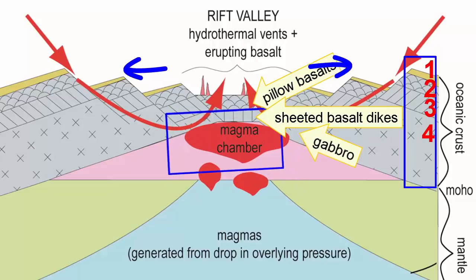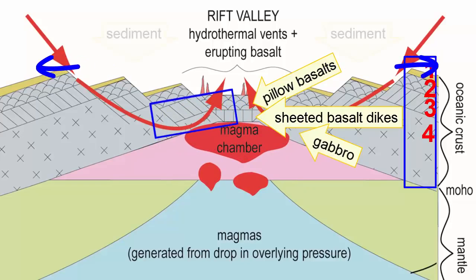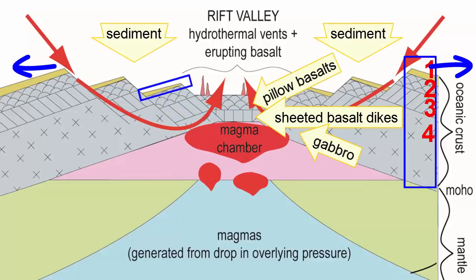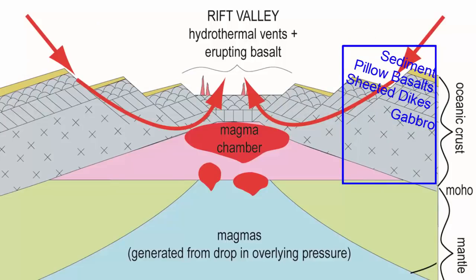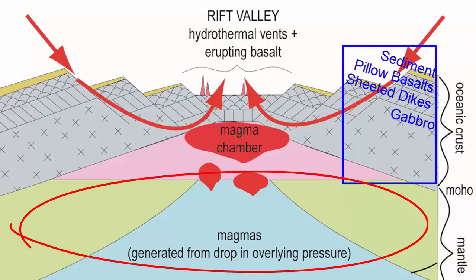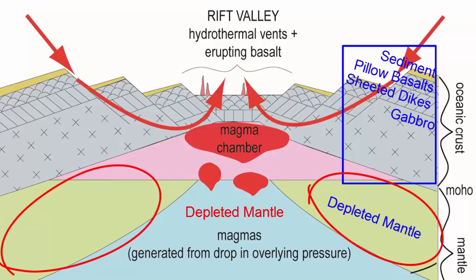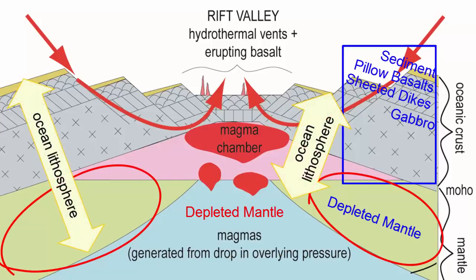As this crust spreads apart to allow new crust to form between it, the ocean will deposit fine grains of dust, ash, shells, and other debris—otherwise known as sediment. These are the four layers of ocean crust. Under the ocean crust is the mantle rock that melted to produce the magmas in the first place, sometimes referred to as depleted mantle because it has had magmas produced from it. It is attached to and under the crust above it, making up the base of the ocean lithosphere.